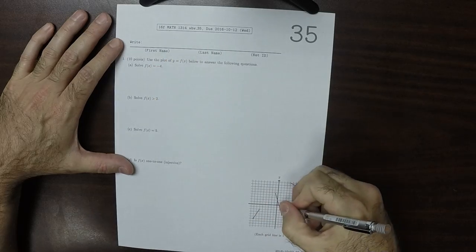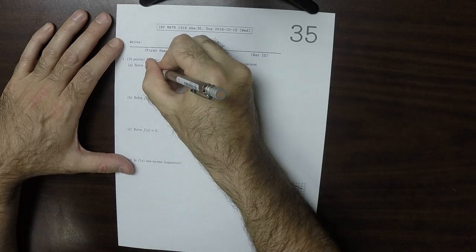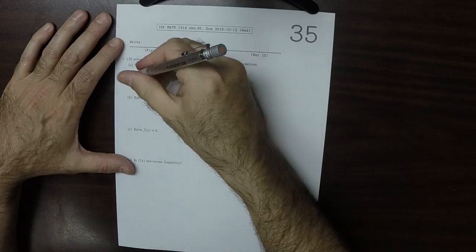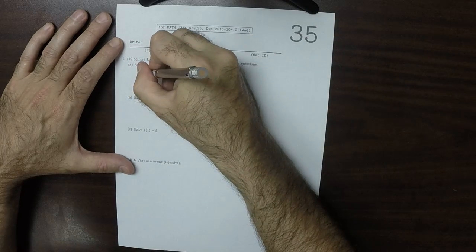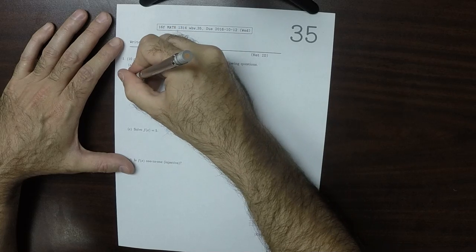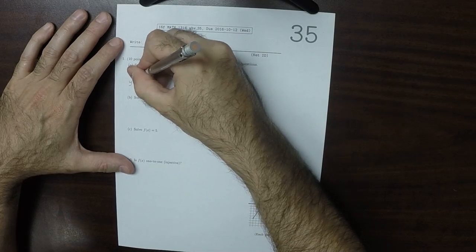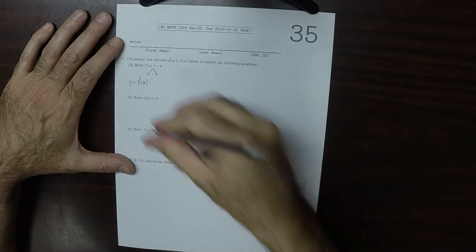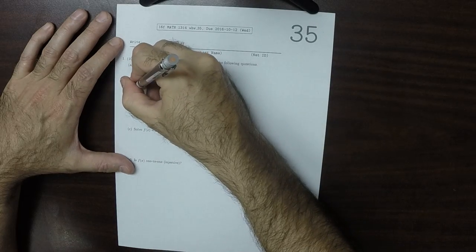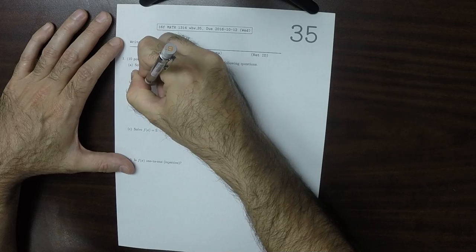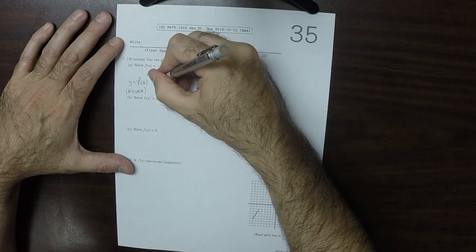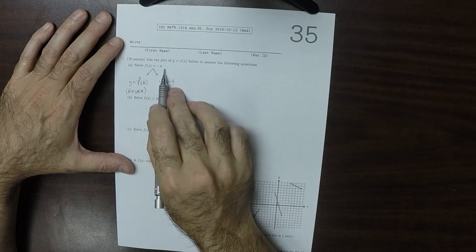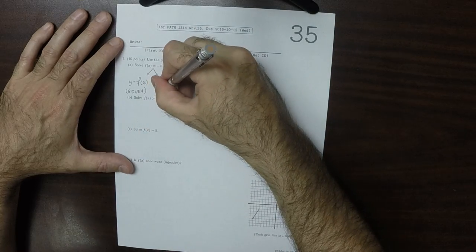So to solve an exercise like this visually, let's get split into two pieces. What we want is we're going to plot y as f of x. Now that was given to us, so that's here. And we're going to also plot y as negative 4, the right-hand side. This is a horizontal line.